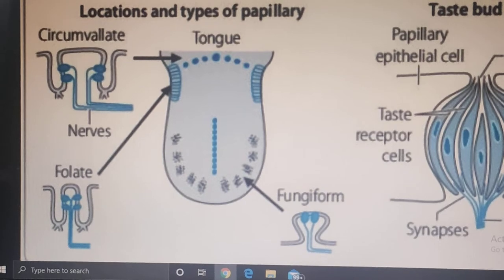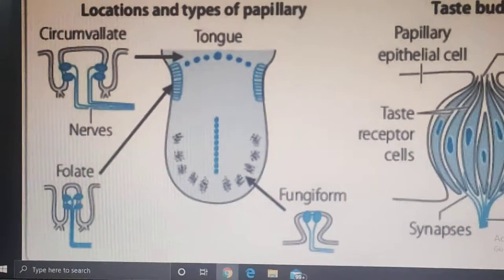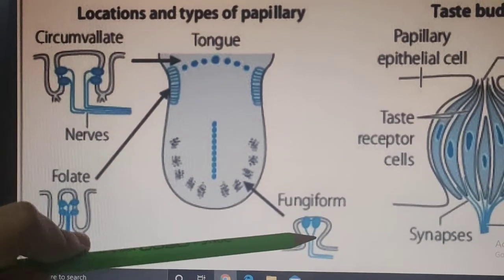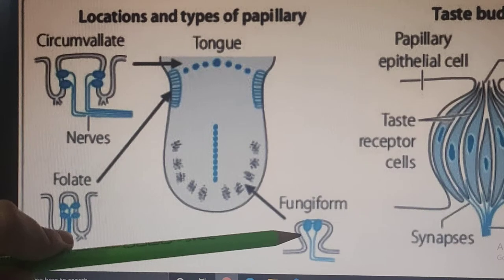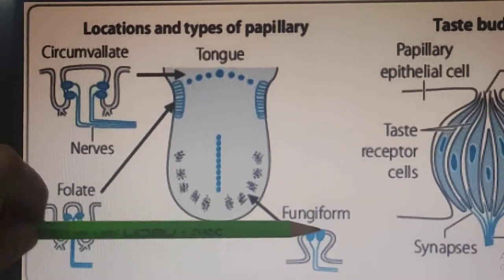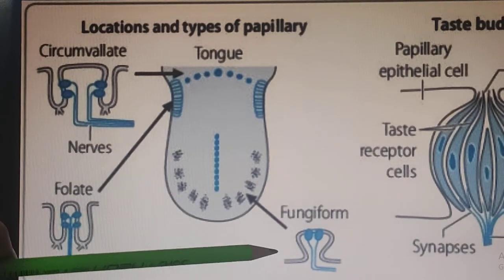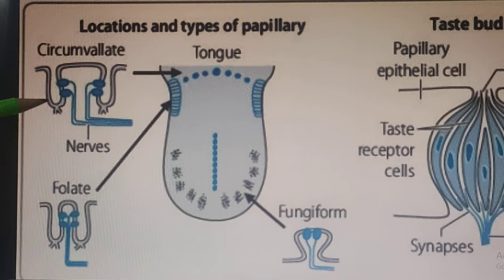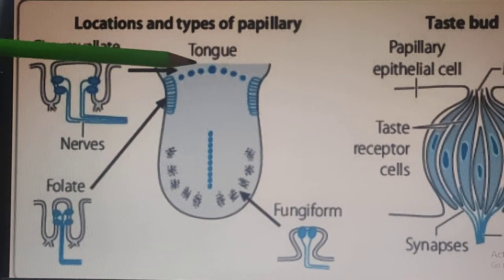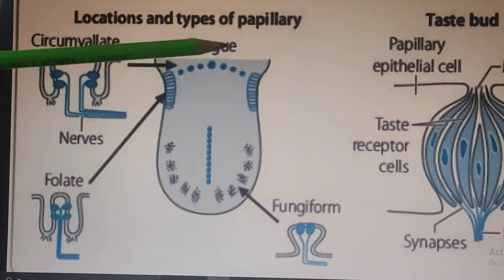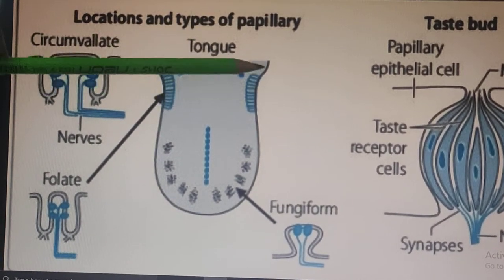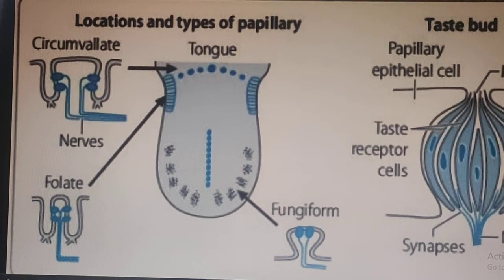The tongue's surface has different types of papillae acting as taste buds. The bottom surface of the tongue has fungiform-type outgrowths. The papillae with the broadest surface are called circumvallate (cubicleate) papillae, present in the anterior region where the tongue is connected. On the sides of the tongue are foliate-type papillae. All of these are taste buds.